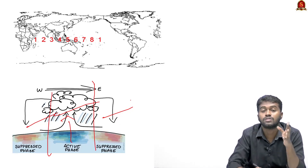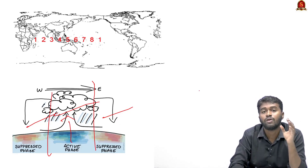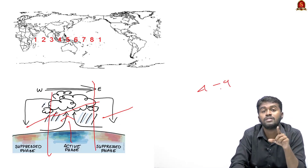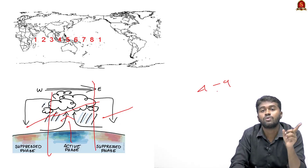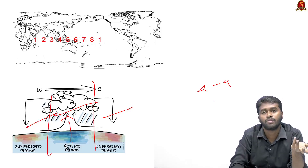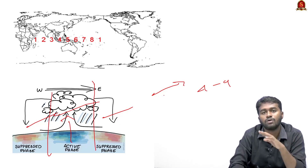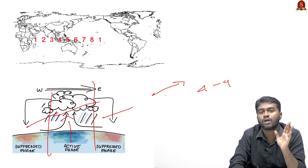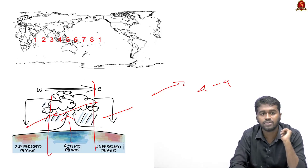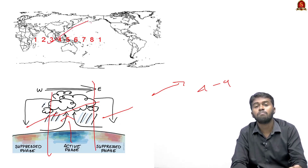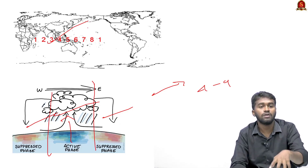This phenomenon can travel at a speed of four to nine meters per second, meaning it can complete a circulation around the world on an average of 30 to 60 days, sometimes up to 90 days. Another important characteristic is that it always travels from west to east — it never travels from east to west. The Madden-Julian Oscillation completes its circulation around the world in eight different phases.